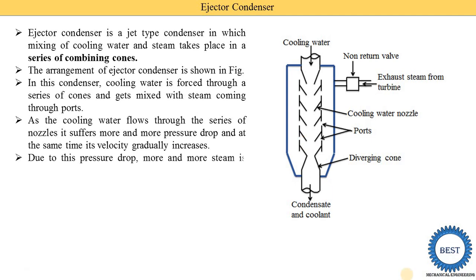Due to this pressure drop, more and more steam is drawn through the ports and gets intimately mixed with the cooling water jet and condenses there. When the cooling water passes through the nozzle, the pressure is dropped. When the pressure drops, the steam is drawn from the ports. When the steam is drawn through the ports, the steam and water mix and the steam is condensed.